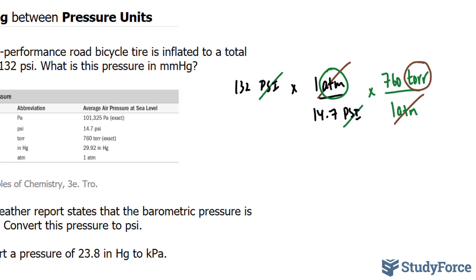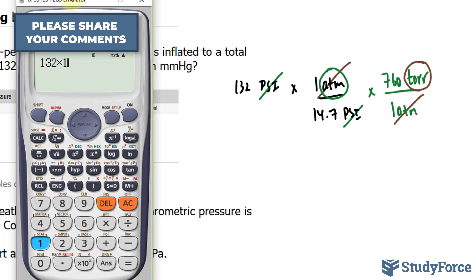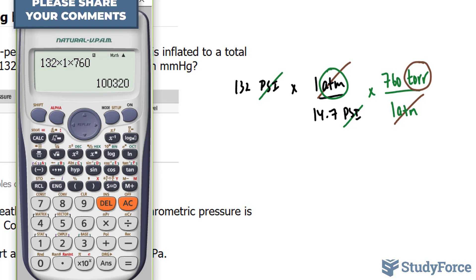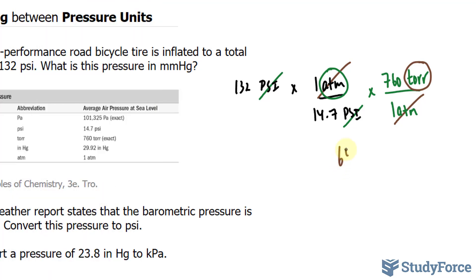So let's go ahead and calculate this. We have 132 times 1 times 760 divided by 14.7, and no need to multiply by 1 either. This gives us approximately 6,824.48 mmHg.